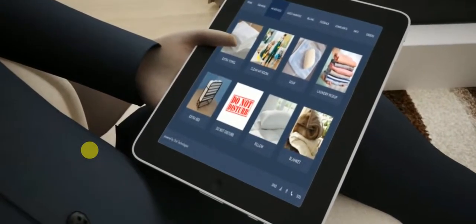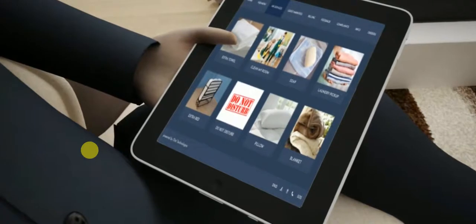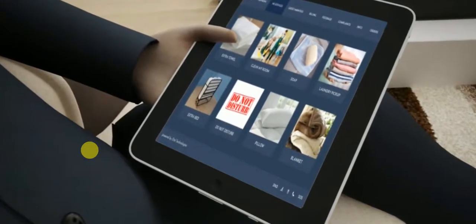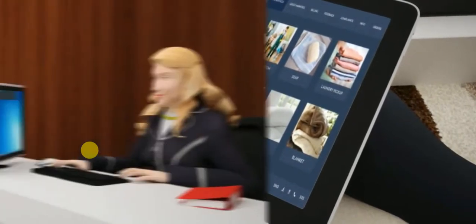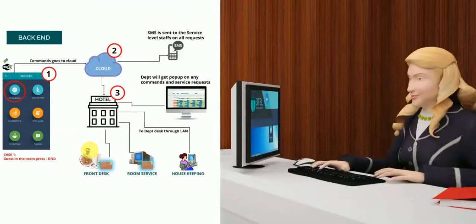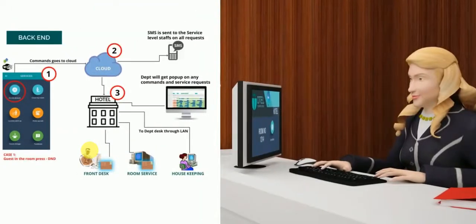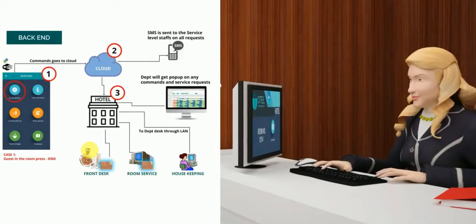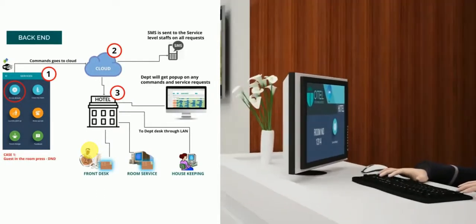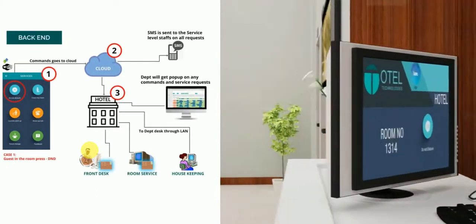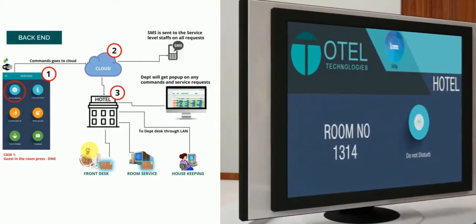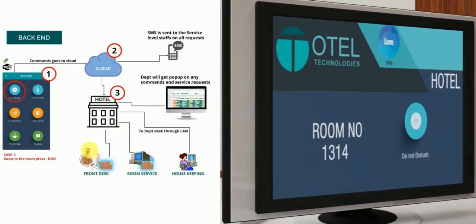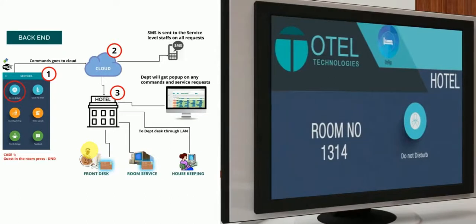A tel app adds great value to hotel operations and guest servicing. For example, when a guest activates Do Not Disturb on the phone or tab, all guest servicing departments are directly notified in real-time. This avoids interdepartmental communications for services and notifications.